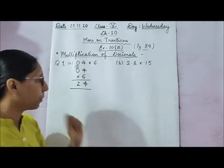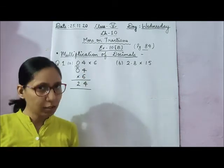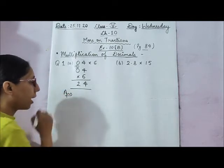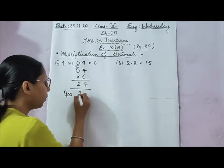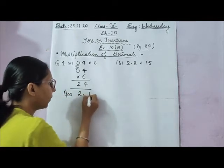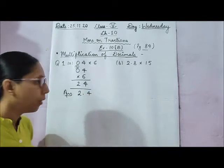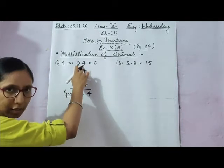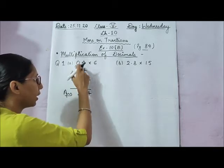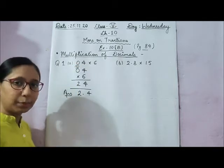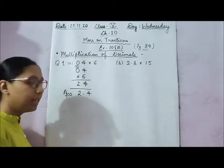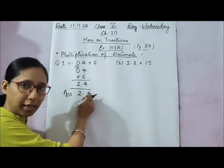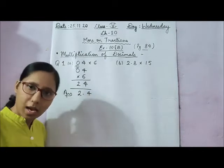When we have multiplied, we are getting 24. But the answer will be 2.4. Why? Because in 0.4, there is 1 digit after the decimal point. That means there is 1 digit before the point from the right. That's why we are writing 1 digit before the point in the answer, giving us 2.4.